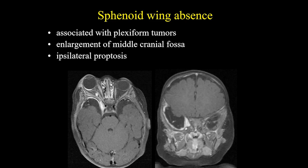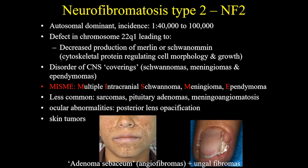Another not so common finding in MRI is sphenoid wing absence, and it is associated with plexiform tumors. You can see enlargement of the middle cranial fossa and sometimes you can find ipsilateral proptosis associated, like you can see in this good example.